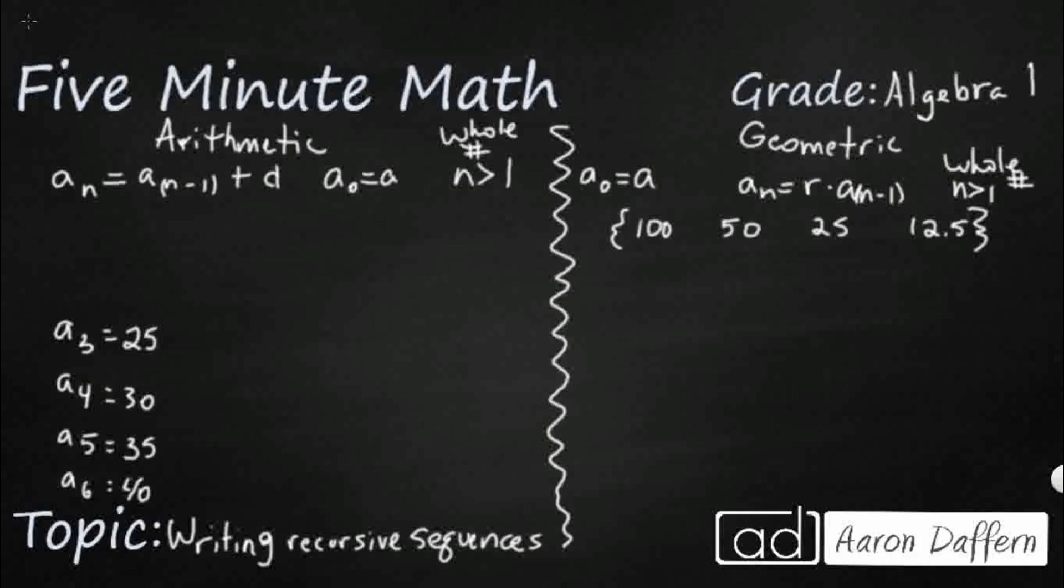We've got two different sequences here that I'm going to show side by side. The arithmetic sequence is when the numbers are growing just with basic arithmetic. If we see we've got the 3rd, 4th, 5th, and 6th numbers in the sequence, we can eyeball it and say it looks like a plus 5.